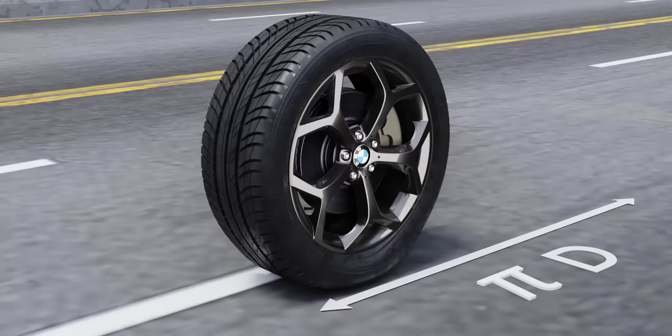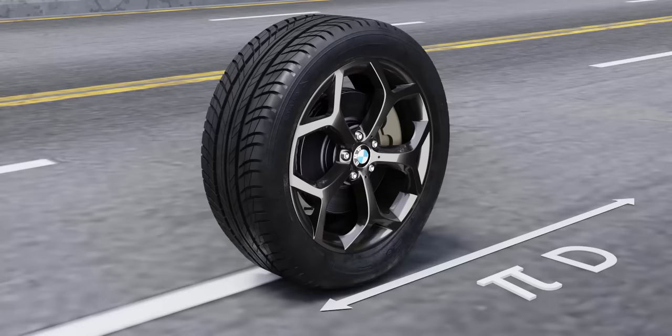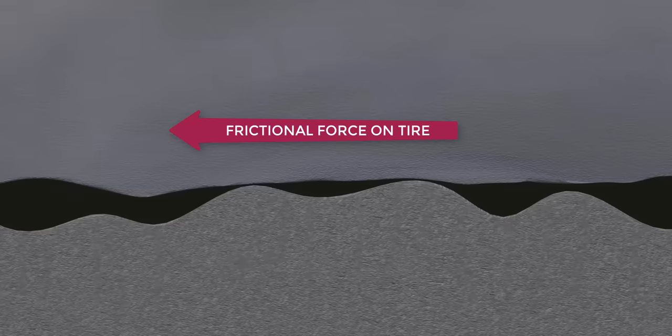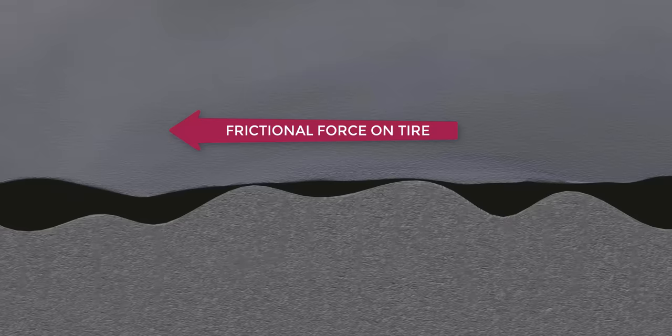We saw earlier what pure rolling and pure sliding cases are. In a pure sliding case, the molecules of the tire and road rub each other, and a frictional force is generated opposite to the tire movement. In short, the whole contact patch molecules will be sliding in this case. The question is: what will be the nature of this microscopic interaction during, say, 50% slip?